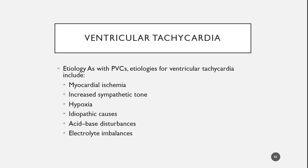The exact same etiologies come into play for VTAC as for PVCs. When we begin to see these happening, we want to try to treat the underlying problem if we can identify it. If our patient is ischemic or hypoxic, we're going to increase their ventilation — we may have to bag our patient or put them on higher levels of oxygen. If it is increased sympathetic tone, we may give a medicine to calm that down, such as amiodarone or lidocaine. With acid-base disturbances and electrolyte imbalances, we're more constrained, but ventilation can help offset that.